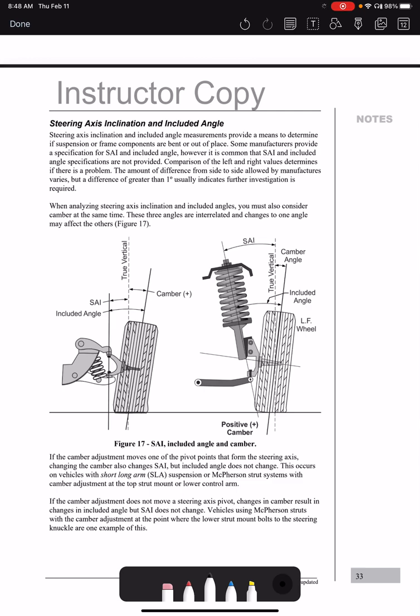And the way that kind of works is when you have an SLA suspension like this. So this is the short long arm suspension, dual wishbone suspension, dual A-frame. There's lots of different names for it. So the SLA suspension.